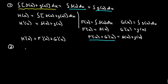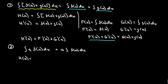The constant multiple rule says that if we integrate a times f of x dx, that's equal to a times the integral of f of x dx. Let's call this h again. So h of x is the function whose antiderivative is equal to this expression on the inside, meaning h prime of x is equal to a times f of x. That's the definition.